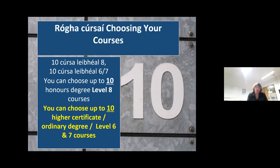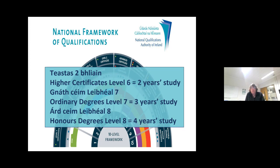There's no information about the actual course in the CAO handbook — it's just the code and the name of the course. So, how many courses can your son or daughter apply for? They can apply in total for 20 courses. There are what they call level six and seven courses, which are offered by the institutes of technology and the technological universities. If you go to university, you're offered a level eight course. You can choose up to 10 at level eight, and you can also choose 10 level six or seven courses. A level six course is for two years, and following the two years, if you go to a technological university or institute of technology, you get a higher certificate in education based on the course you're doing.